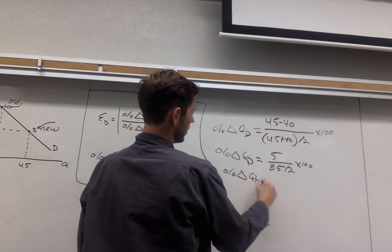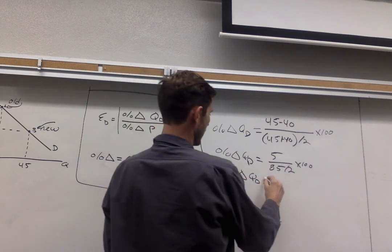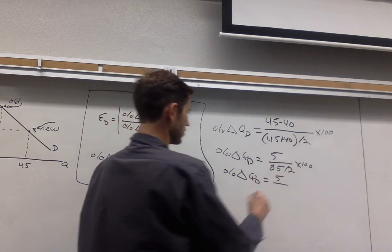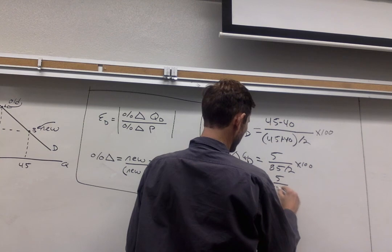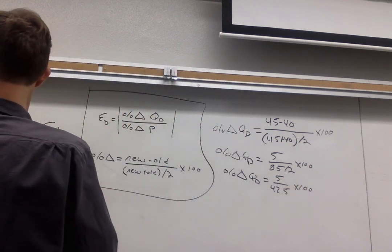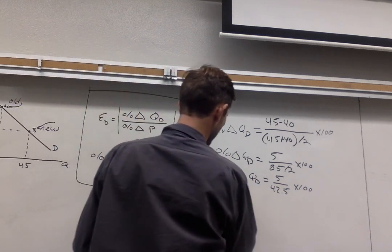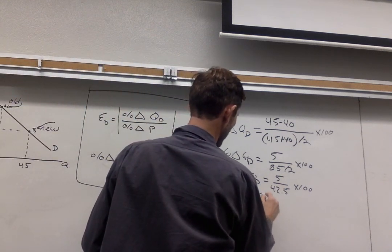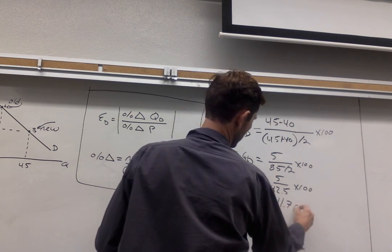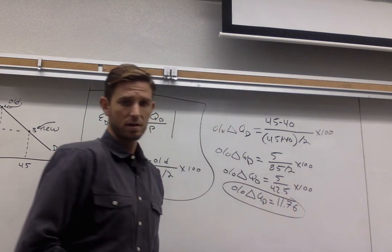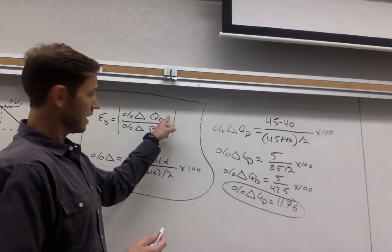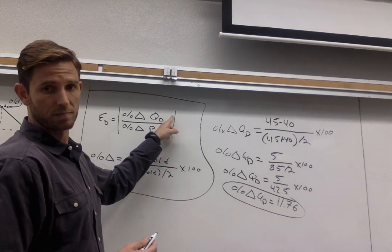I'll just go ahead and go through all the steps here. Percentage change in quantity demanded then is going to be 5 over 85.2 in the denominator. So that'll be 42 and a half. And then lastly we want to express this as a percent. So percentage change in quantity demanded is going to be 11.76, just like that. Very good. So we're going to set this aside at 11.76% and we're going to end up putting that up here in the numerator. Alright.